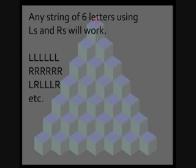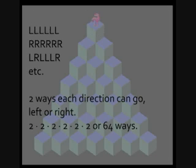If you call left by the letter L and right by the letter R, any string of six letters using L's and R's will work. You could go all six lefts or all six rights or left, right, left, left, left, right, and any kind of combination will work. It's like you have an alphabet with only two letters and you're making six letter words. In that case, you have two ways each one can go, so two for the first one, two for the second, two for the third, two for the fourth, two for the fifth, and two for the sixth. You have to multiply all those together. So that's two to the sixth, or 64 ways that Q-Bert can reach the bottom.